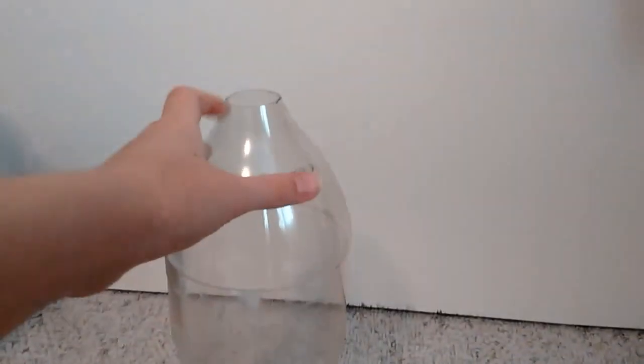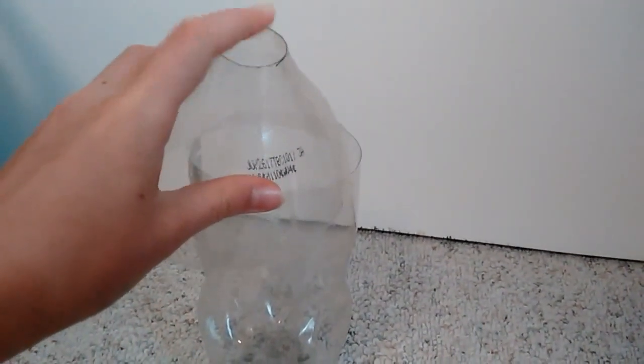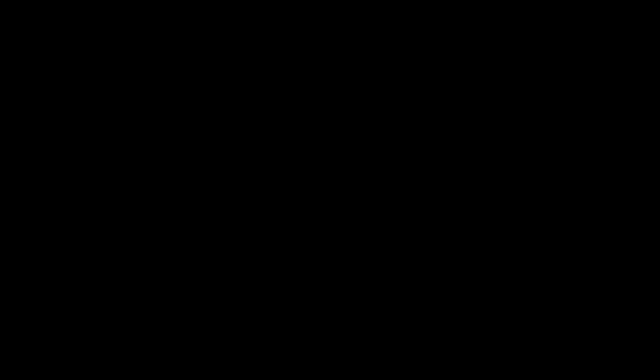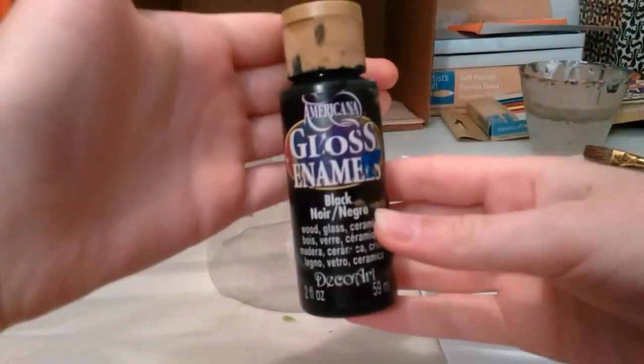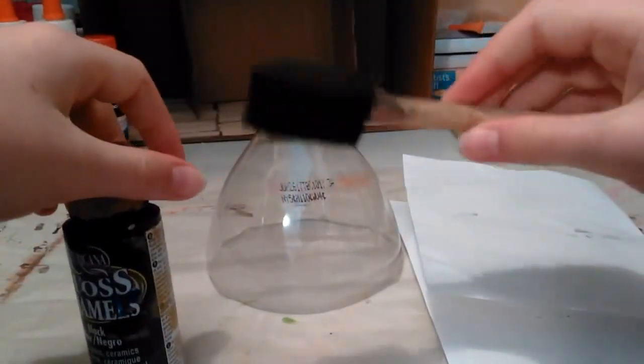You are going to need this part, and as you can see we cut off the part where the bottle goes on. You will not be needing this part. So now I'm just going to paint this part black using this black acrylic paint and a sponge brush.